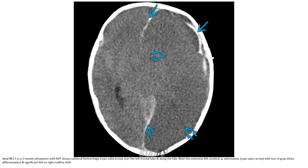Non-contrast CT in a 2-month-old patient with abusive head trauma shows subdural hemorrhage over the left frontal lobe and along the falx. Note the extensive left cerebral decreased attenuation with loss of gray-white matter differentiation and significant left-to-right midline shift.